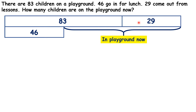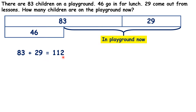There are different ways that we can solve this problem, but to start with, let's work out the total number of children we had in the playground at some point. If you add 29 to 83 — and you might need to use column addition for this — you should get a total of 112. So there were 112 children out on the playground at some point.